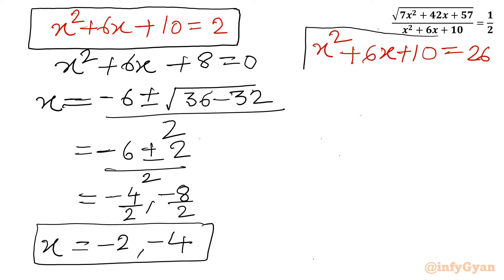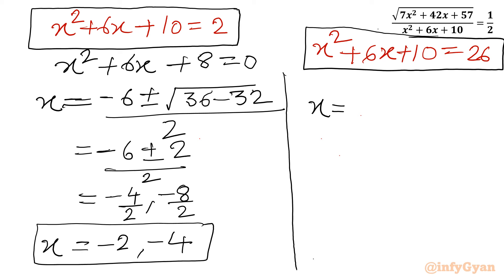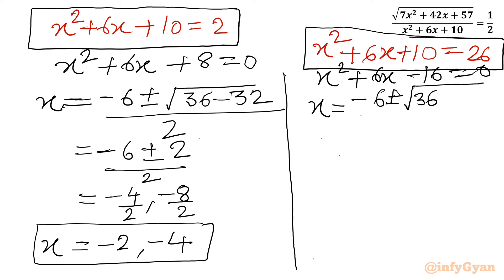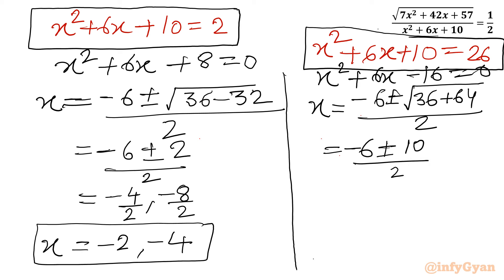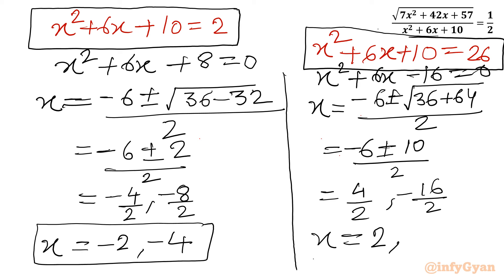Now for the second quadratic equation, x² + 6x - 16 = 0. Applying the quadratic formula: x = (-6 ± √(36 + 64)) / 2 = (-6 ± √100) / 2 = (-6 ± 10) / 2. So x = (-6 + 10)/2 = 4/2 = 2, and x = (-6 - 10)/2 = -16/2 = -8. Two more real solutions: x = 2 and x = -8.